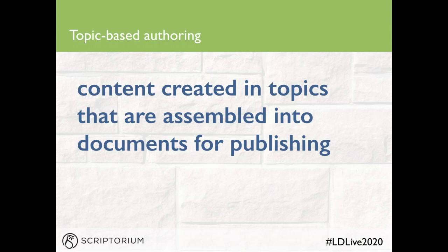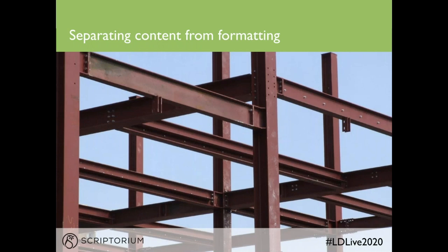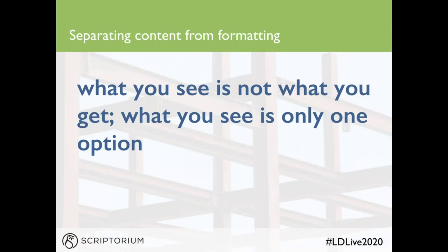Finally, let's look at separating content from formatting. In desktop publishing-based authoring tools, the formatting and appearance of your content is tied to the content itself — what you see is what you get in the final output. In DITA, you create and tag the content, then the formatting is applied separately and automatically when the output is generated. This is important for generating different outputs, for example HTML or PDF, from the same sources. So instead of what you see is what you get, what you see is only one option for how the final deliverable might look.